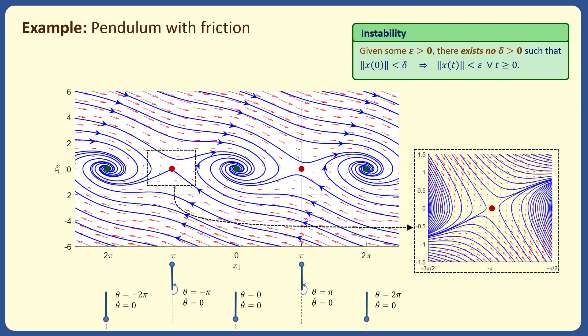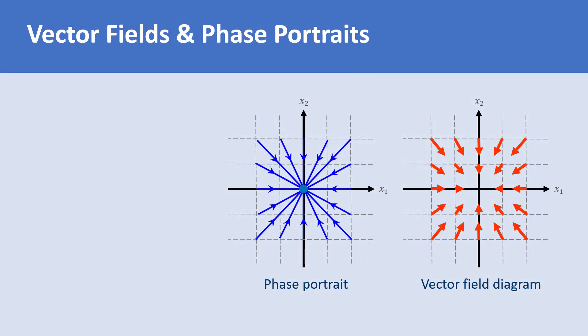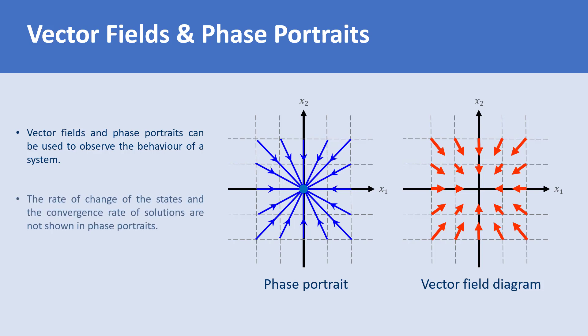To summarize: vector fields and phase portraits can be used to observe the behavior of a system, such as the stability properties of equilibrium points. The rate of change of states and convergence rate of solutions are not shown in phase portraits, although this can be partially understood from the length of the arrows in the vector fields. Finally, vector fields and phase portraits are used for two-dimensional systems, but their concepts can be extended to higher-dimensional systems as well.